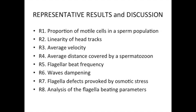Representative results: By CASA analysis, the following parameters can be obtained — proportion of motile cells in a sperm population, linearity of head tracks, average velocity, and average distance covered by a spermatozoon. By analysis of the flagellum, one can document the flagellum beat frequency, the wave dampening, the flagellum defects provoked by osmotic stress, and it is possible to get a precise analysis of the flagellum beating parameters.